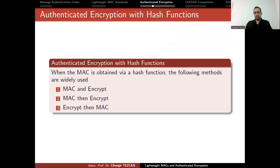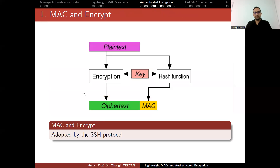You can also use a hash function and a block cipher together. There are three famous approaches: MAC-and-Encrypt, MAC-then-Encrypt, and Encrypt-then-MAC. In MAC-and-Encrypt, you take the plaintext, encrypt it to produce ciphertext, and also run the plaintext through an HMAC using a secret key to produce a tag, then concatenate them. This is used by the SSH protocol in its earlier versions as the default.